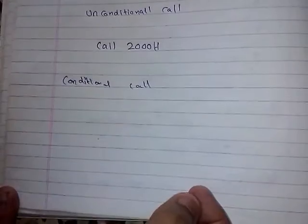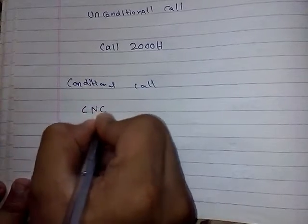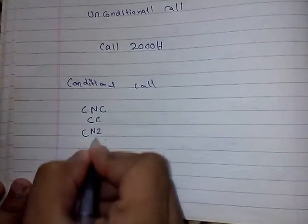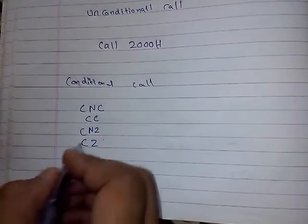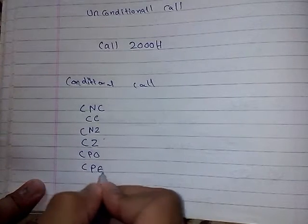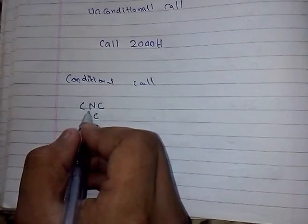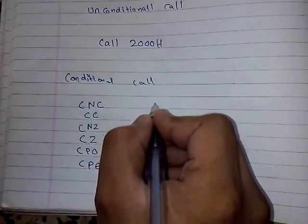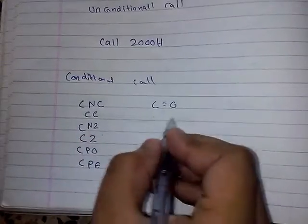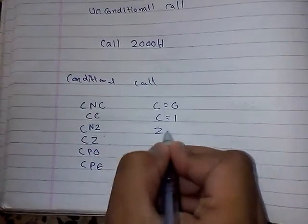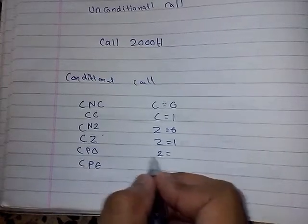Next we have conditional call. Just like the jump instruction, in conditional call we have: call if not carry, call if carry, call if zero, call if not zero, call if parity odd, and call if parity even. The call will be initiated only if carry is generated, or only if carry is not generated, or when zero is not generated, or when zero is set, or when parity is even.